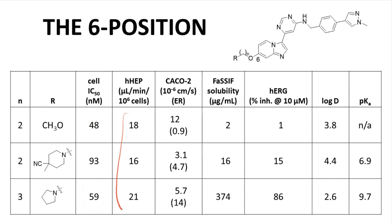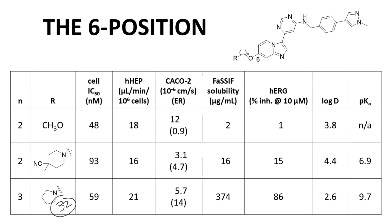Metabolic stability in human hepatocytes is also fairly constant among the compounds shown. The one property that dramatically improves in the bottom-row compound — compound 32 — is solubility, which is critical for absorption. Are any properties worse? Yes, permeability is lower and the efflux ratio is much higher in compound 32. High efflux can reduce absorption. Another issue is HERG channel inhibition, a possible cardiovascular safety risk; basic amines are often found in HERG-active compounds, and this pyrrolidine R group is a quite basic amine. Despite these shortcomings, the discovery team moved forward with compound 32, indicating that maximizing solubility was a top priority.